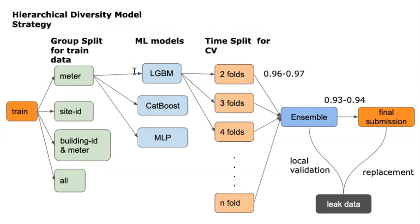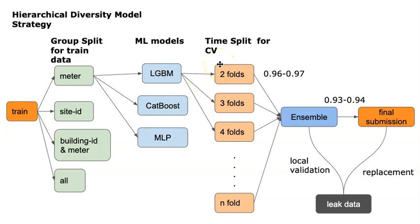It was important for us to train many diverse models. This diagram shows how we built them. We started by splitting the data — for example, we could split by meter and train four models, one for each meter, or split by site, or split by building ID and meter pair, or train on the entire dataset. Next, we chose the algorithm, which could be LightGBM, CATBoost, or a multilayer perceptron, since some models are better than others for a given data type. For example, CATBoost is known to work well with categorical data. We validated our models using time series cross-validation, and varying the size of the validation set as a hyperparameter helped us build more diverse models.